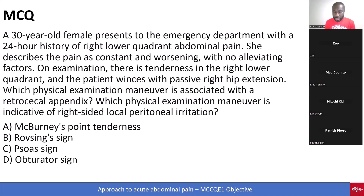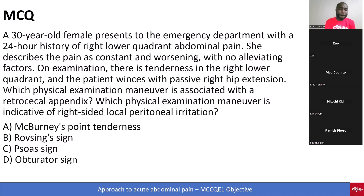A 30-year-old female presents to the ED with a story of right lower quadrant abdominal pain. She describes the pain as constant and worsening with no alleviating factors. On examination, there is tenderness in the right lower quadrant, and the patient winces with passive right hip extension.